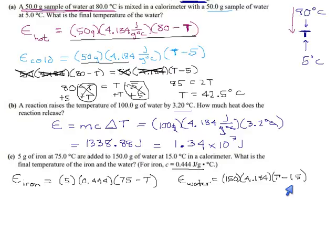As before, this energy and this energy are one and the same. It's being sucked out of the iron and absorbed by the water, so we can say that these two amounts are equal. And that gives us 5 times 0.444 times 75 minus T equals 150 times 4.184 times T minus 15.